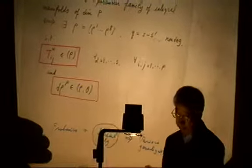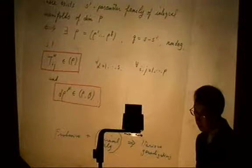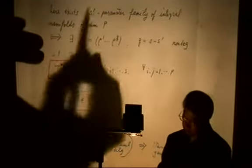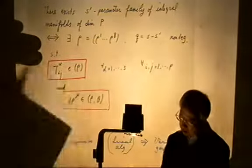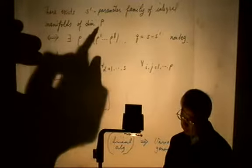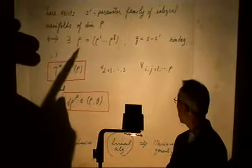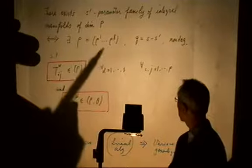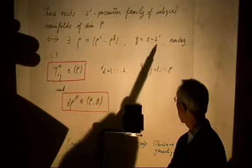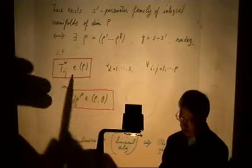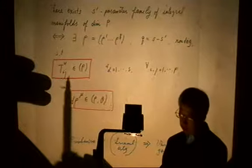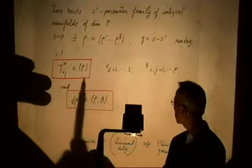That linear algebra is on this torsion matrix. Here is Theorem 1. There is an S-prime parameter family — S-prime less than S — of integral manifolds of dimension P (maximal dimension), if and only if there exists a set of non-degenerate functions rho, where Q equals S minus S-prime, such that each entry of the torsion matrix belongs to the ideal generated by rho.